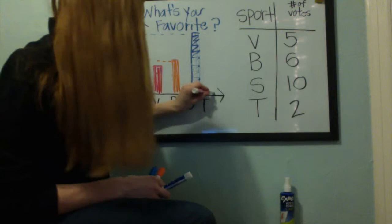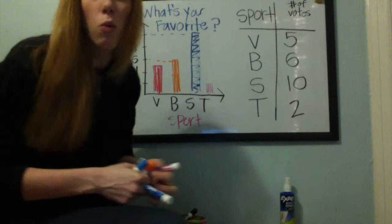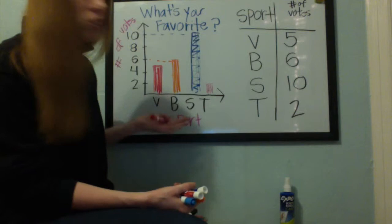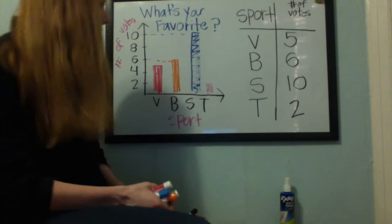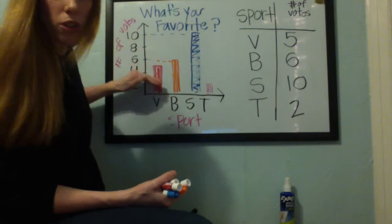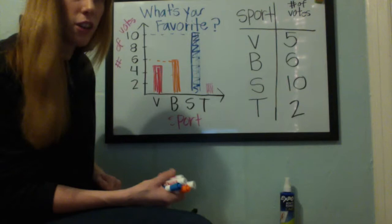Now you may ask why we need to know this. Well, this is going to be seen on our STAR testing. It may show a graph like this and want you to interpret the graph. So let's say we asked: which sport was the least favorite? Based on the visual of this graph, you can see that the lowest bar is going to equal the lowest number of votes. In this case, can we guess? Tennis.